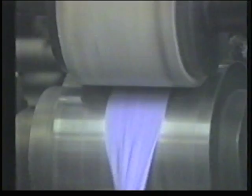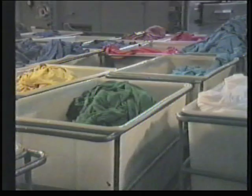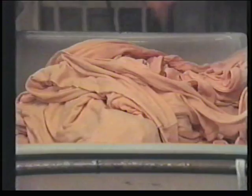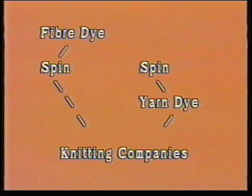Textiles can be dyed as fibres, yarns, fabrics or even garments. Coloured yarns achieved by fibre dyeing and spinning, or by spinning and yarn dyeing, provide raw materials for the knitter. These yarns are used to produce the very wide range of pattern garments available, for example from the electronic flat machines. These yarns are also used to produce stripes and jacquard pattern fabrics.